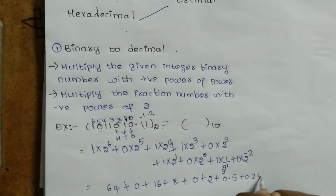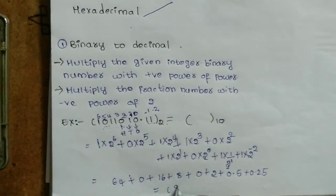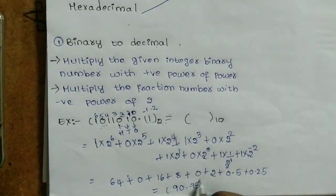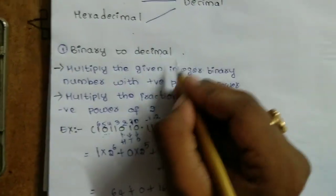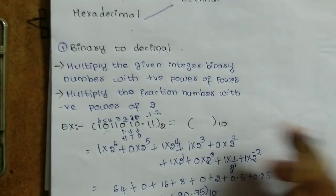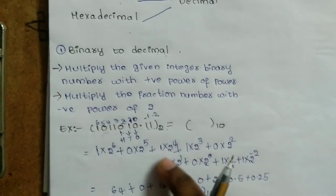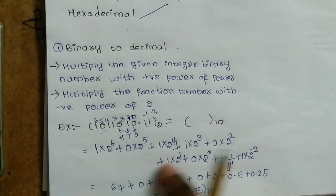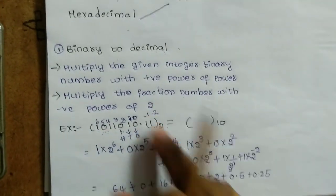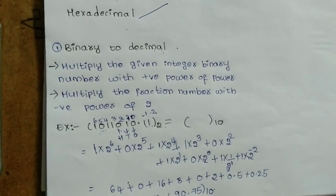The answer is 90.75. We write it with suffix 10, because when converting to decimal, we add the suffix 10. The positive and negative powers are multiplied and added together.